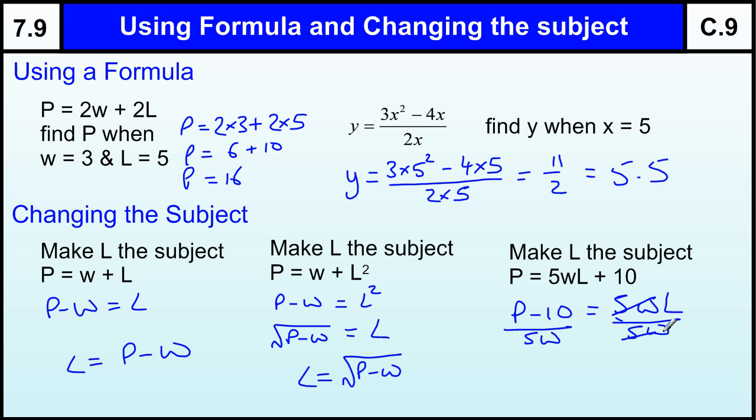Because 5W and 5W cancel, just leave me with the L. So I end up with L equals P minus 10 all over 5W. So there's a few pointers on how to do those sort of questions.